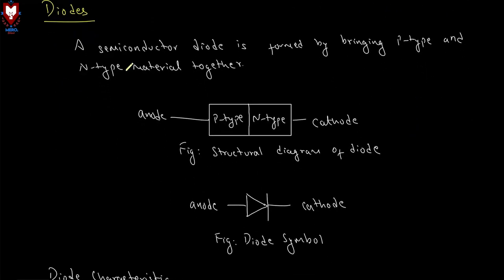A semiconductor diode is formed by bringing P-type and N-type material together. The P-type material is called the anode and N-type material is called the cathode. This structural diagram shows the diode symbol with anode and cathode.